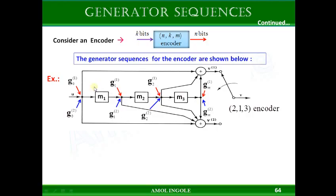The generator sequences or impulse responses for this encoder can be written like this. For output 1, there will be one generator sequence. For output 2, that is V2, there will be another generator sequence. So if you have two outputs in an encoder, you will have two generator sequences. Let us see how to write those generator sequences from the encoder.